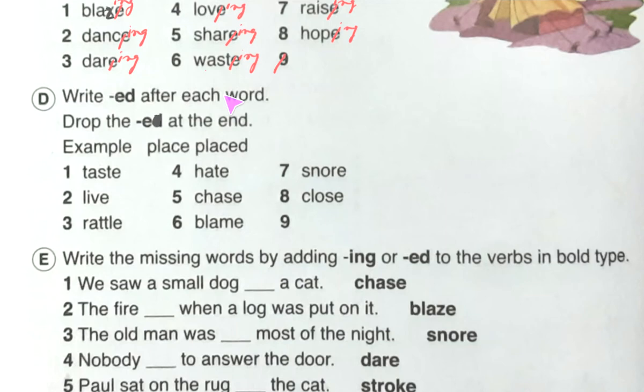Exercise D: write ed after each word — drop the e at the end. The example given is place→placed. One interesting thing here is that you do not actually need to drop the e, because in every case we are writing ed. So wherever e is given, we just put d after it.